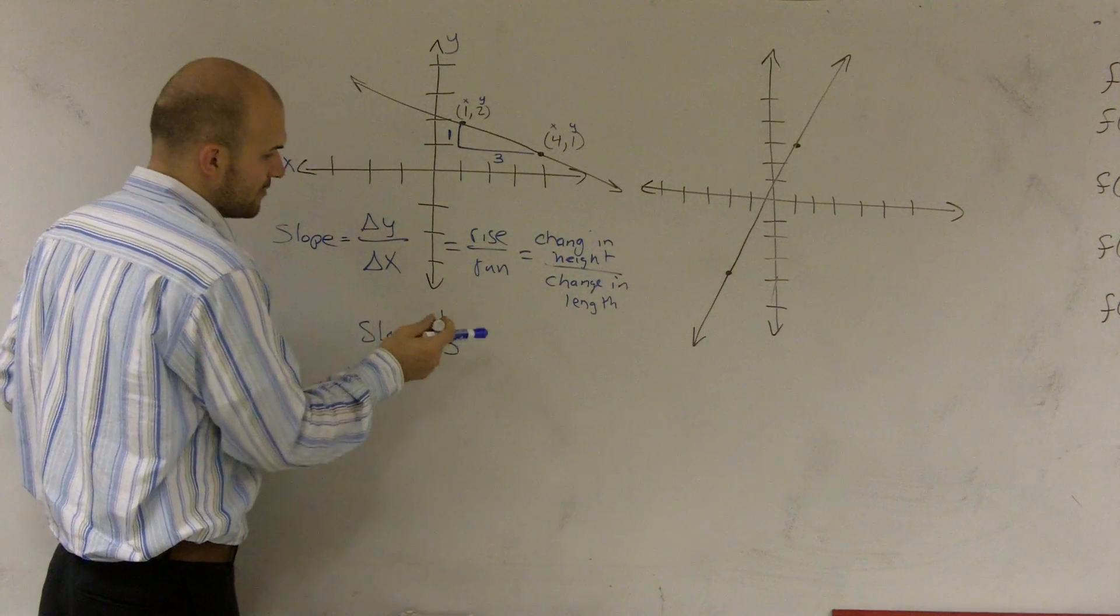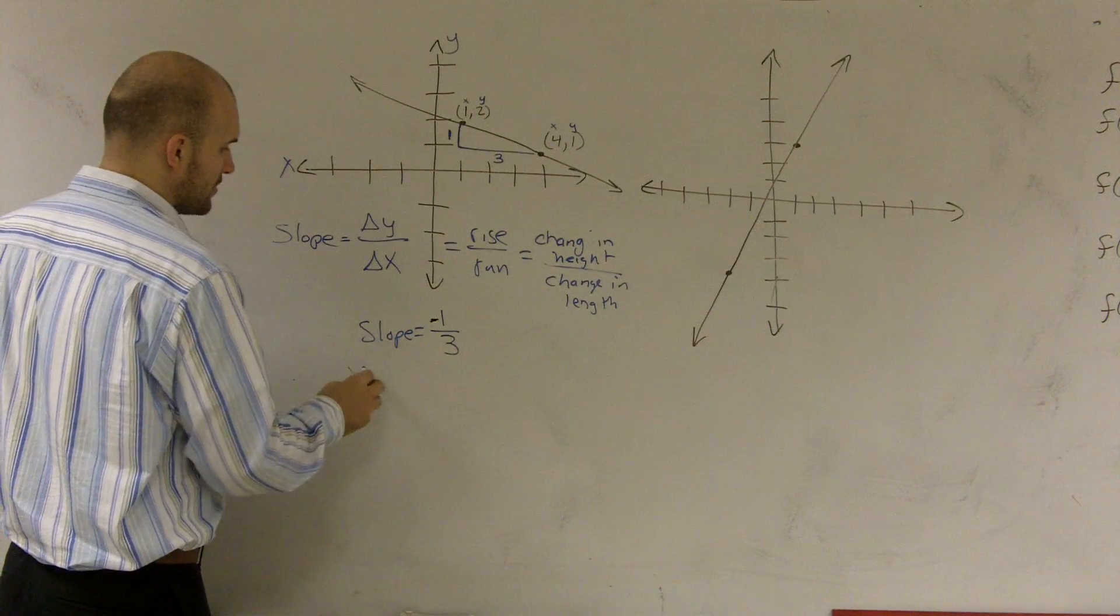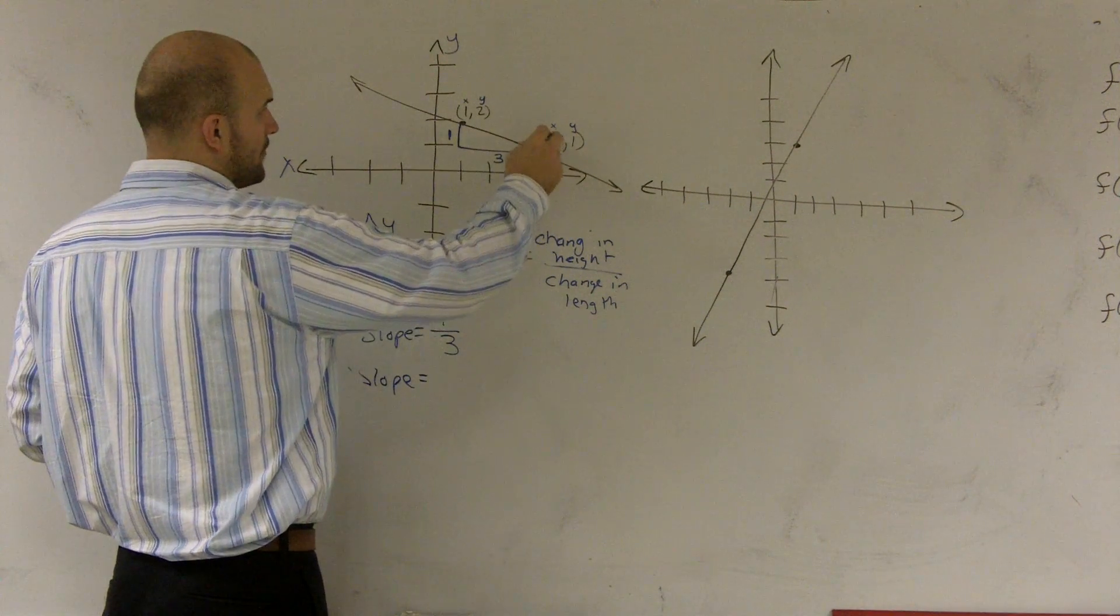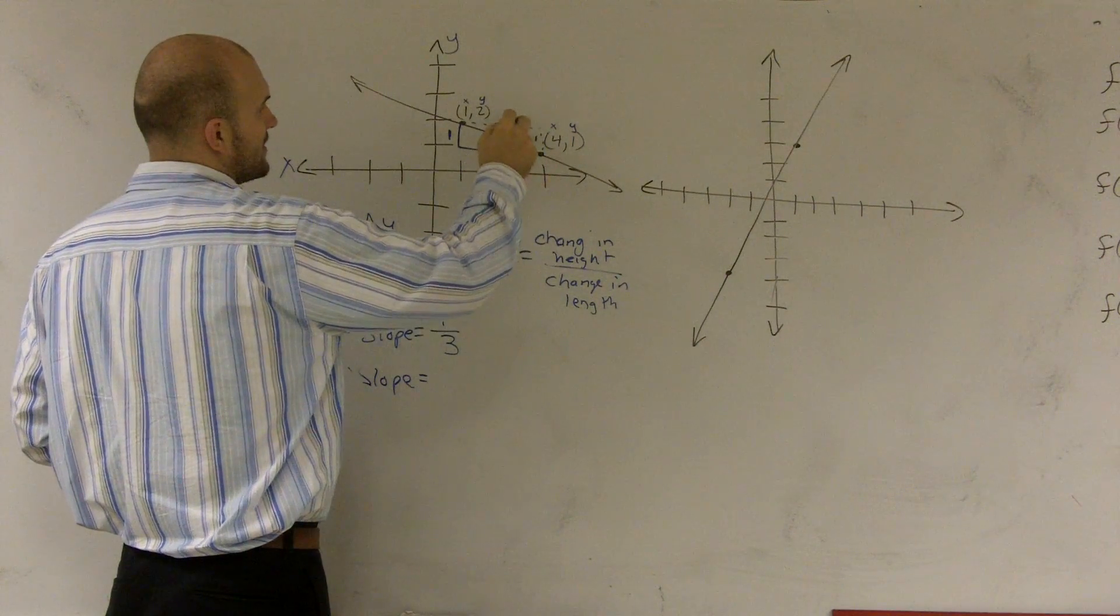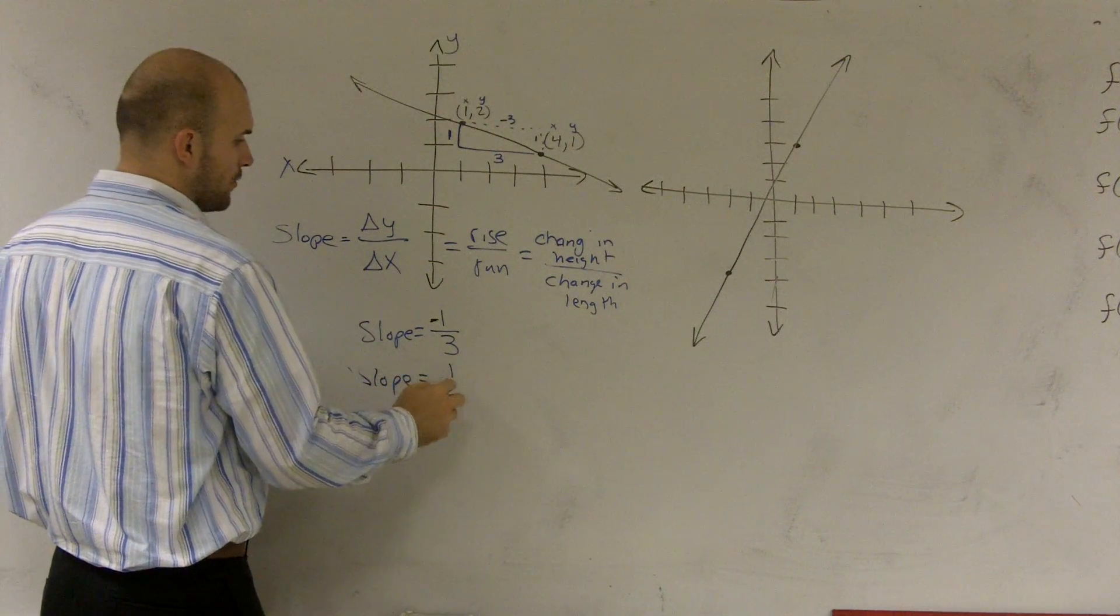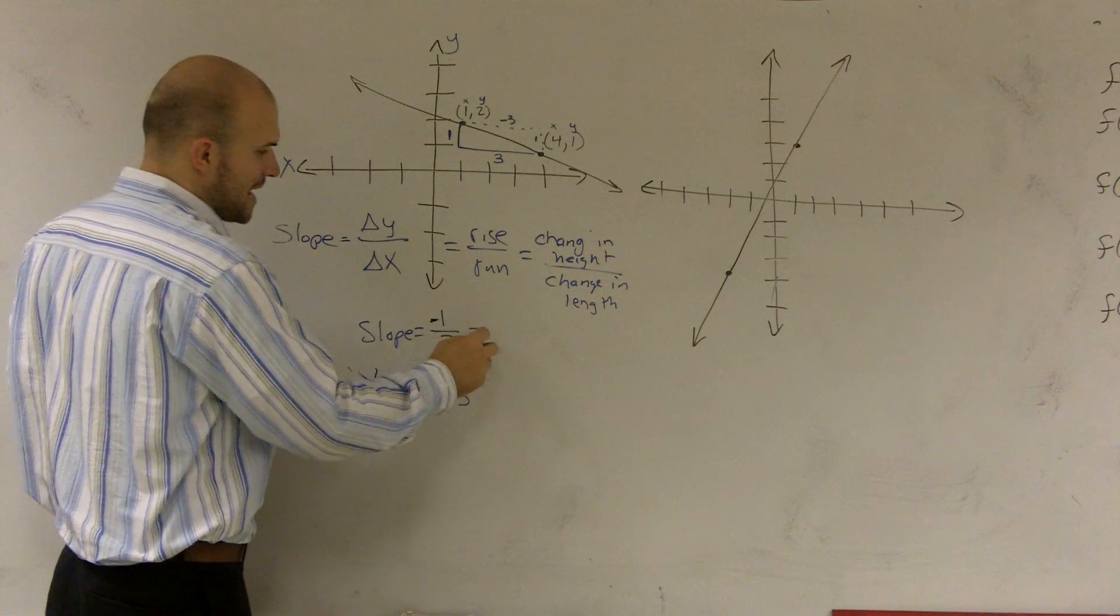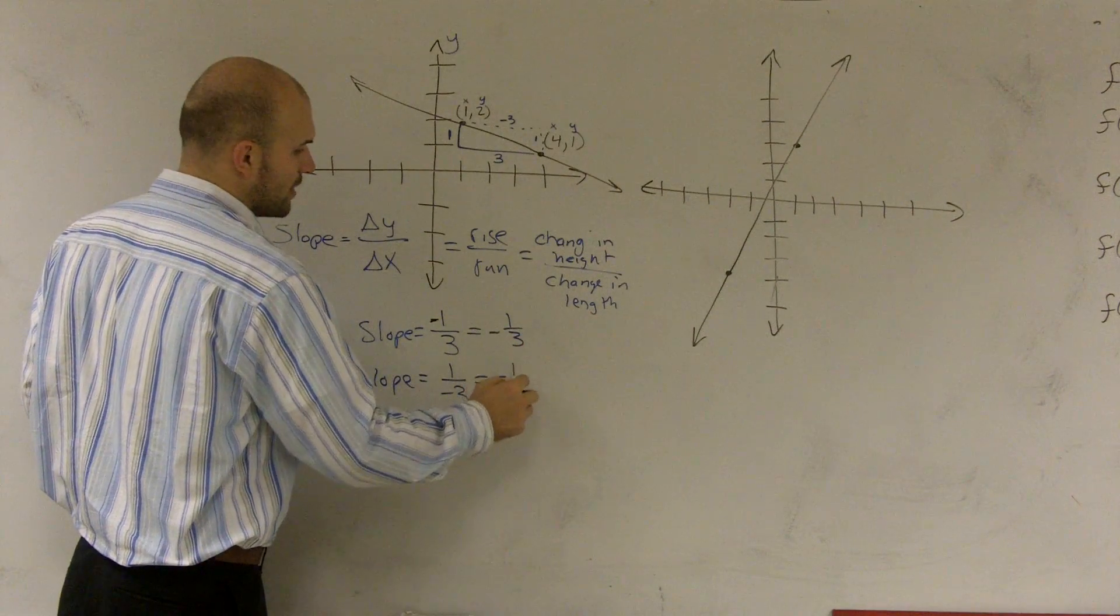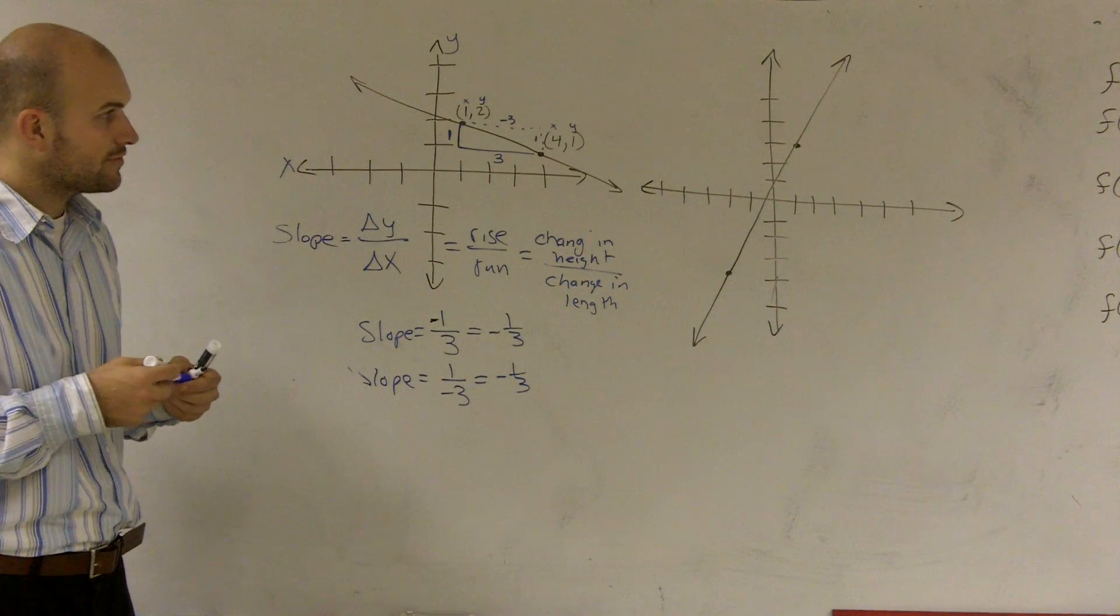You could also read your slope from right to left. That means I could go up one to the left. So I could go up one and then to the left. So up would be one and then to the left would be three. So that would be a one over negative three. Now, it doesn't matter if the top is negative or the bottom is negative. I'm still going to have a negative one third either way. So my slope for this example is a negative one third.